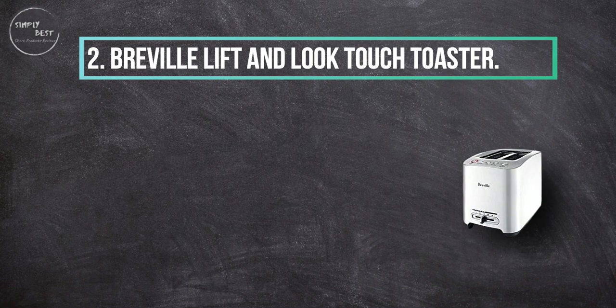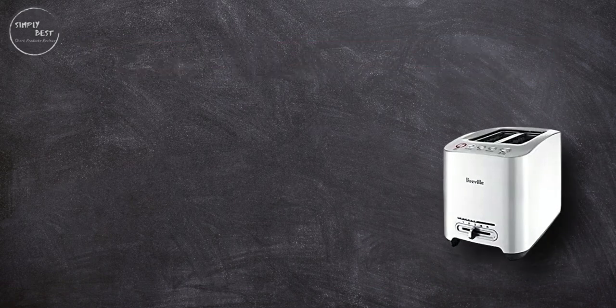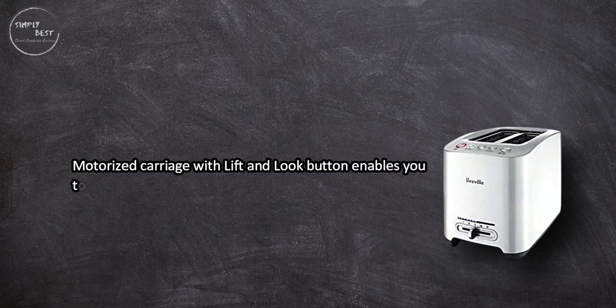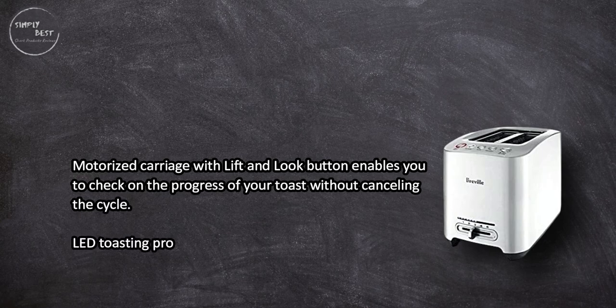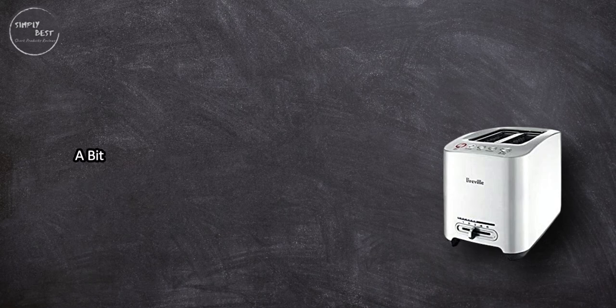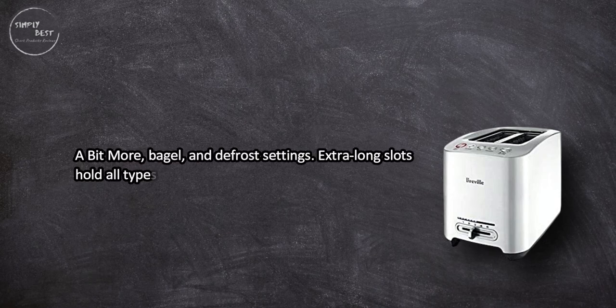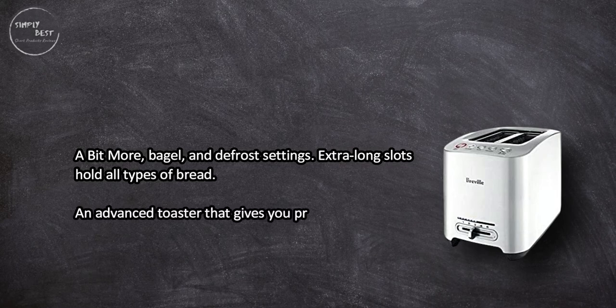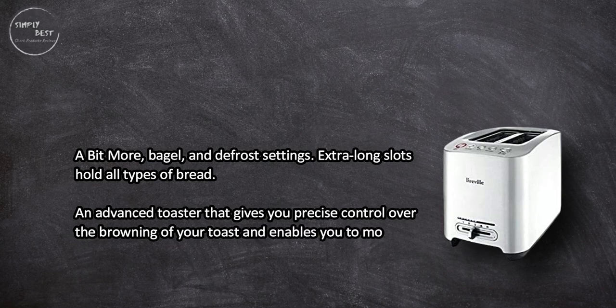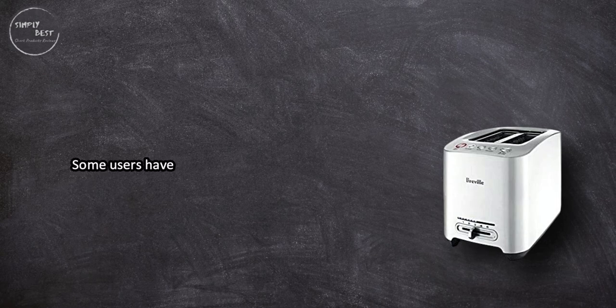At number two, Breville Lift and Look Touch toaster. Motorized carriage with Lift and Look button enables you to check on the progress of your toast without canceling the cycle. LED toasting progress indicator, five-level browning control, A Bit More, bagel, and defrost settings, extra long slots hold all types of bread. An advanced toaster that gives you precise control over the browning of your toast and enables you to monitor its progress throughout. Some users have complained of mechanical issues after a few months of use.